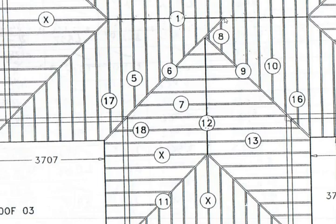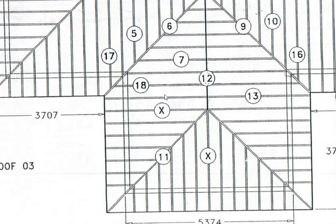The next rafter is number six, the supporting valley rafter — it supports the supported valley rafter on this side. By the picture you can see that the supporting valley rafter is the same length as the major hip rafter.